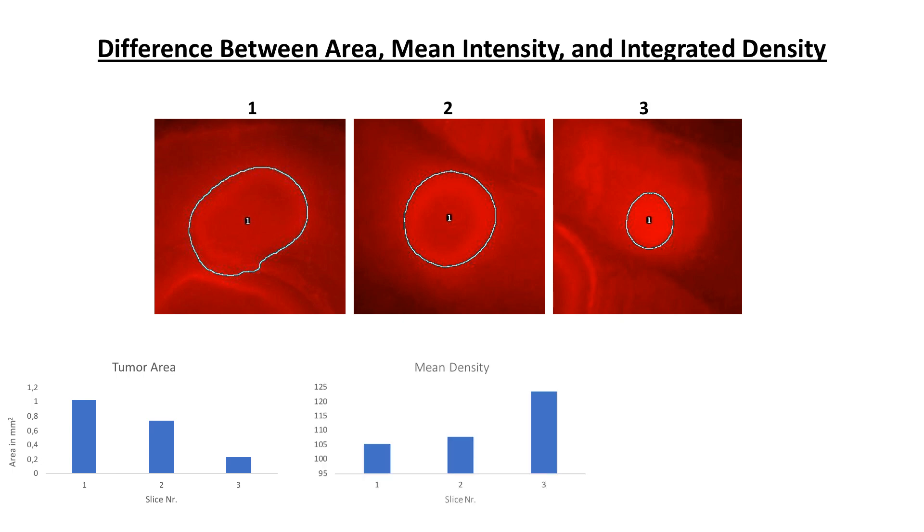However, when we determine the mean pixel intensity the right image with the smallest ROI has by far the most intensive red, followed by the ROI in the middle image and finally the ROI in the image on the left with the lowest red intensity.